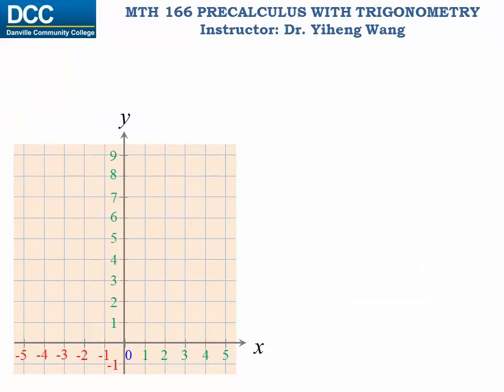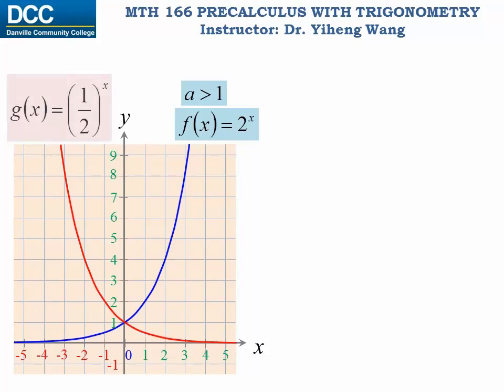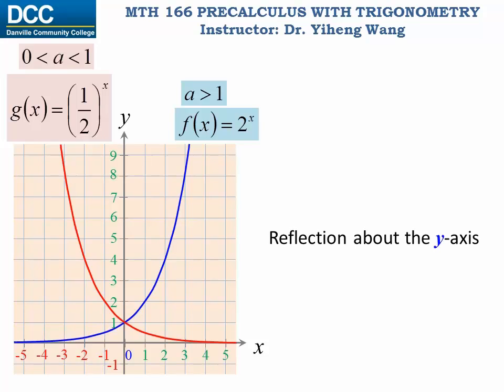If we graph the function for f(x) equals to 2 to the x power, this is an example of exponential function with a base constant a that is bigger than 1. And on this same coordinate system, let's graph the function g(x) equals to 1 half to the x power. In this case the base constant a is 1 half, which is between 0 and 1. And if you look at these two graphs, do you notice that they are actually mirror images of each other? Or they are reflection of each other with respect to the y axis. And why is that?